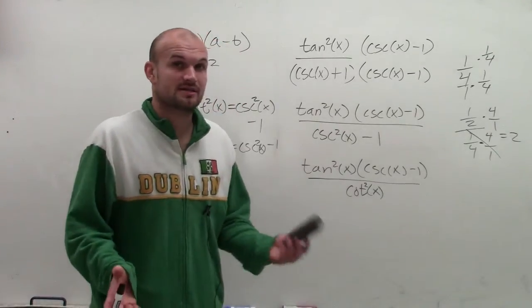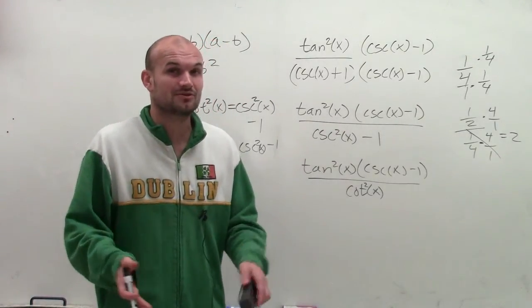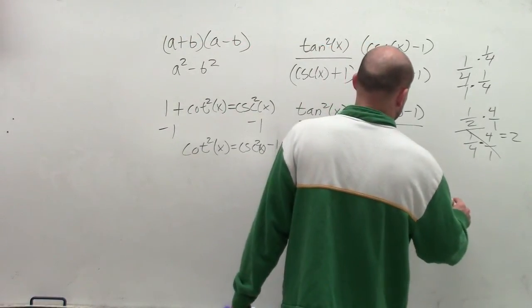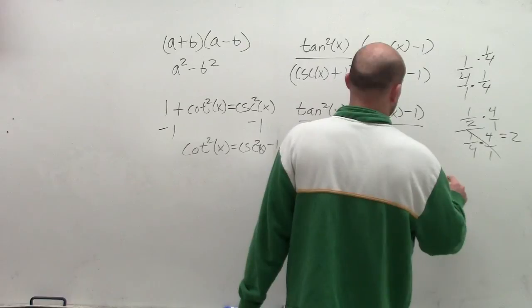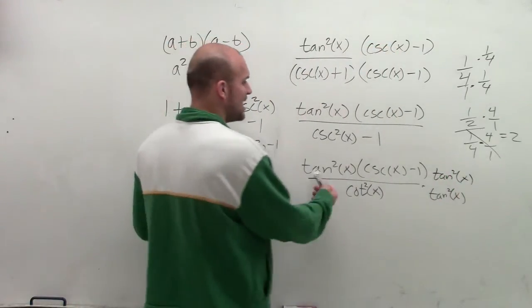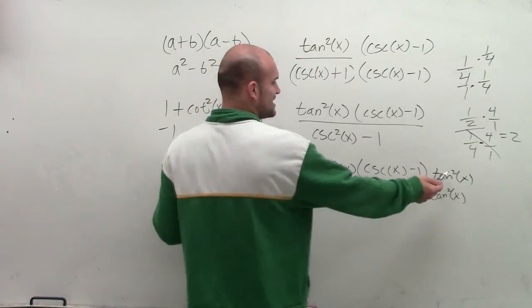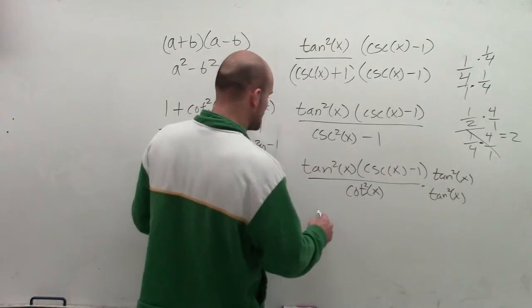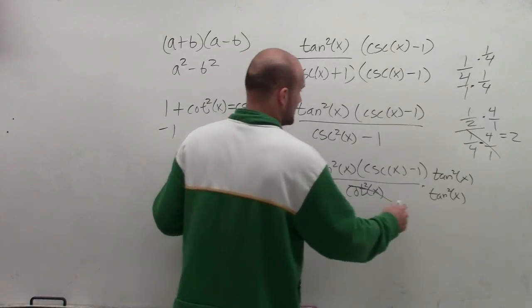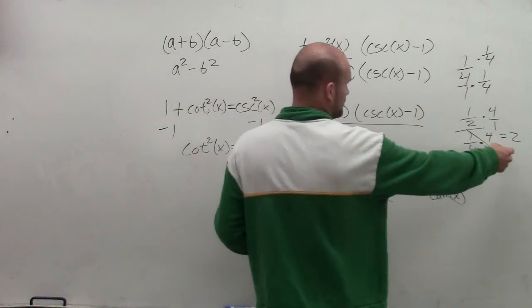Well, the reciprocal of cotangent squared is going to be 1 over cotangent squared, which is equal to tangent squared of x. So I'm going to multiply by tangent squared of x on your numerator and on your denominator. So therefore, what I notice is now, see, it's helpful that I didn't distribute this, because now I can just multiply tangent squared times tangent squared, which will leave me tangent to the fourth of x.